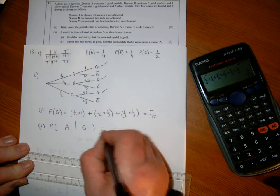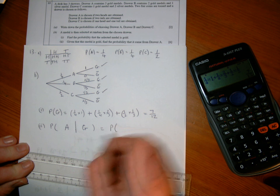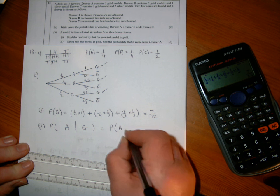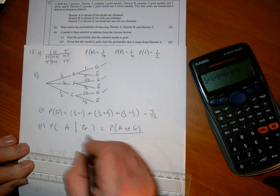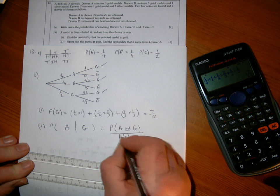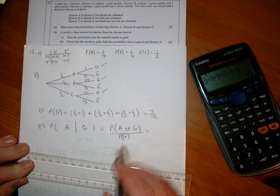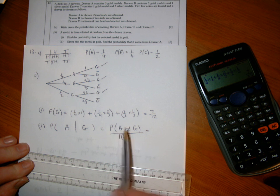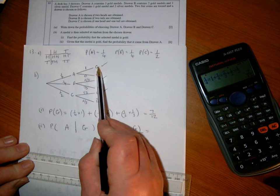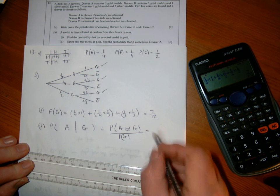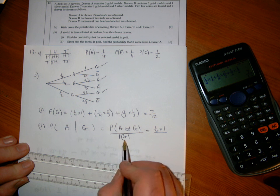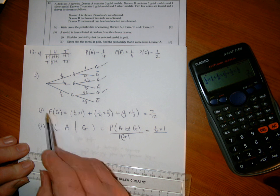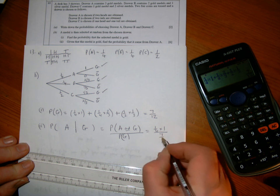I replace the line with an AND, so it's A and gold over probability of gold. Looking at A and gold on the tree diagram, there's A and a gold: a quarter times one on top, over probability of gold I found out in the first part of the question: seven over twelve.